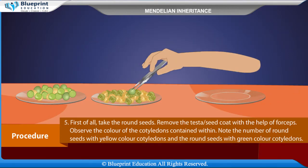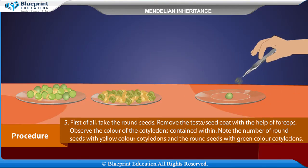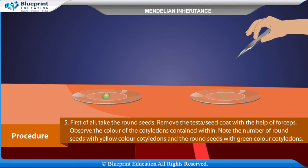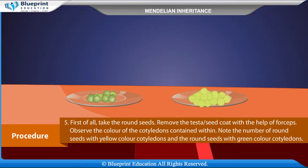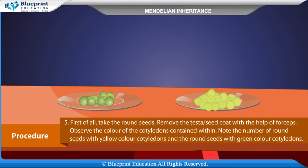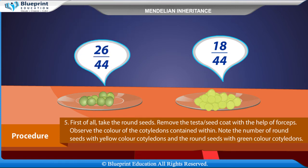First of all, take the round seeds, remove the testa — the seed coat — with the help of forceps. Observe the color of the cotyledons contained within. Note the number of round seeds with yellow color cotyledons and the round seeds with green color cotyledons.